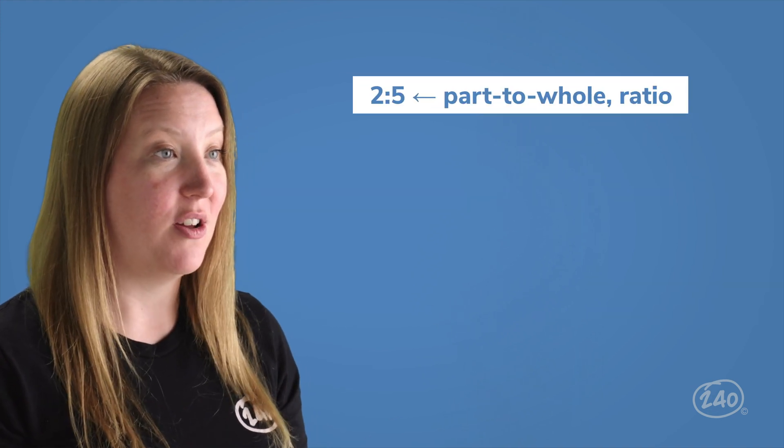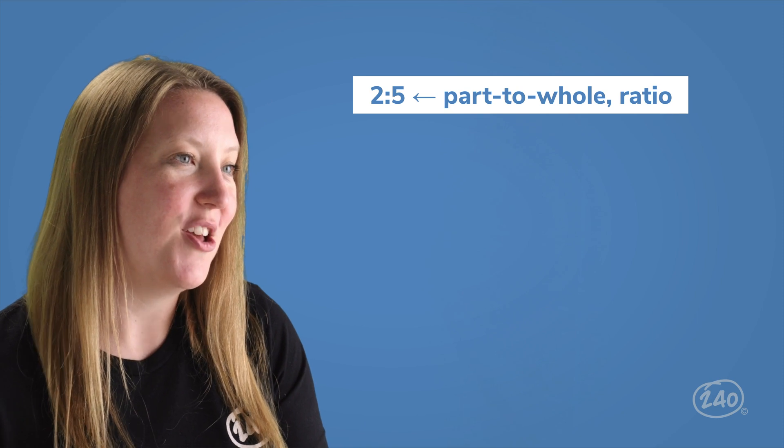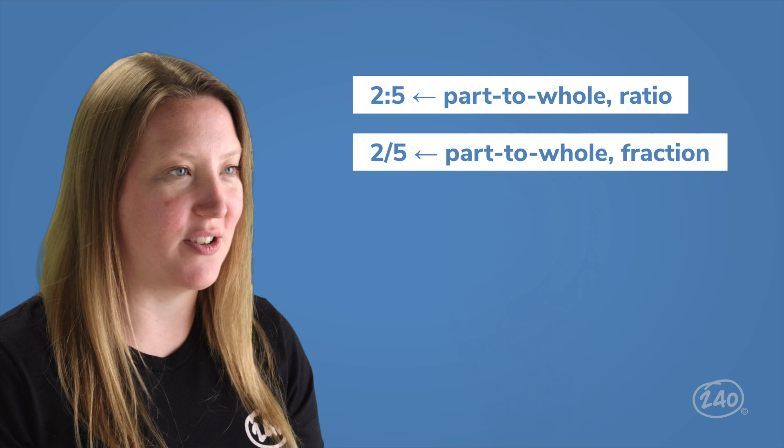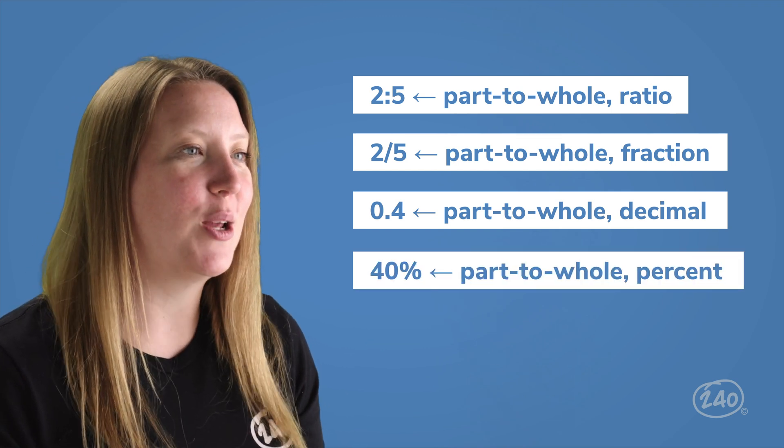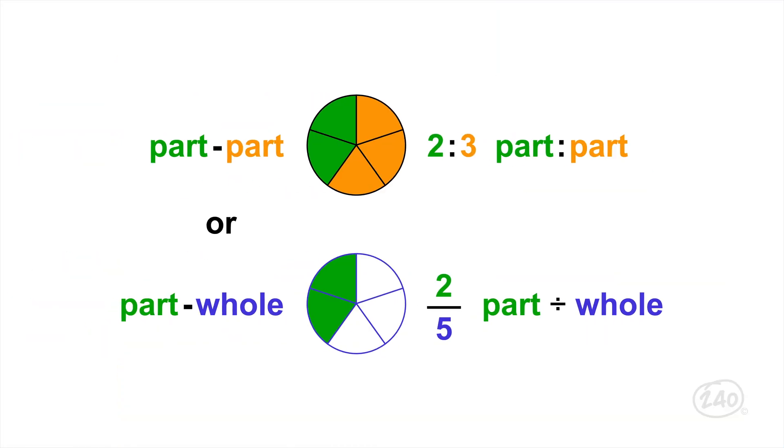Let's say that a problem states that there are two chocolate chip cookies and three sugar cookies in a jar. The following represent different ways someone could represent the jar using part to part comparisons: two to three, for every two chocolate chip cookies there are three sugar cookies, or three to two, for every three sugar cookies there are two chocolate chip cookies. We can also construct part to whole comparisons since the whole is two chocolate chip cookies plus three sugar cookies equals five total cookies. For chocolate chip cookies, we have two to five. For every five cookies, two are chocolate chip. We also have two fifths, which represents our chocolate chip cookies as a fraction. There is also 0.4, which represents our cookies as a decimal. We can also use 40 percent, the percentage of chocolate chip cookies. Here, let's take a closer look.